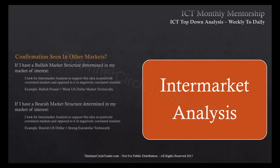Intermarket analysis on the weekly works the same as on the monthly. If I have a bullish market structure in my market of interest, I look for positively correlated markets to support it and negatively correlated markets to oppose it — for example, bullish pound and a weak US dollar technically. For bearish market structure, I look for support in positively correlated markets — such as a bearish US dollar alongside a strong euro dollar technically.